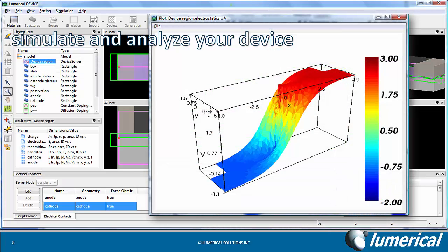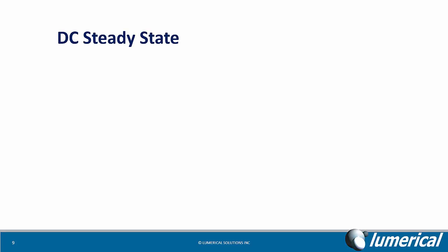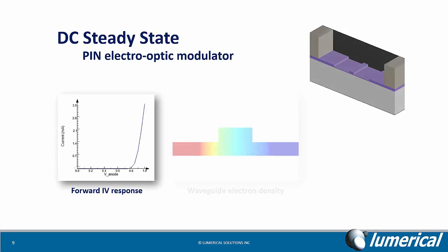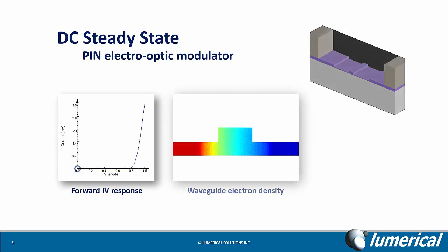You can then simulate and analyze your device in the same graphical layout environment. The charge transport solver can perform steady state simulations. In this example, the forward bias IV response of a PIN electro-optic modulator is illustrated alongside the spatial distribution of the electron density in the waveguide region.